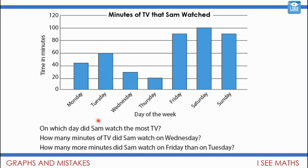On which day did Sam watch the most TV? That's Saturday — just the highest bar; I don't even need to know how many minutes. How many minutes did Sam watch on Wednesday? I go to Wednesday and take that reading — it's evenly halfway between 20 and 40, so I think it's 30 minutes. How many more minutes did Sam watch on Friday than on Tuesday? Friday looks like 90 minutes, Tuesday looks like 60 minutes — a difference of 30 minutes.